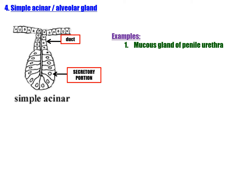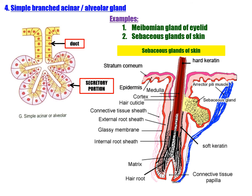Fourth: simple acinar or alveolar gland — secretory unit round or oval in shape. Example: salivary gland, mucous glands of the penile urethra. Acinar gland: secretory unit round or oval. Alveolar gland: secretory unit flask-shaped. The terms 'acini' and 'alveoli' are often used synonymously. Glands where the secretory elements are greatly distended are called saccular glands. Classification summary: unicellular, simple tubular, simple alveolar, compound tubular, compound alveolar, and compound tubulo-alveolar glands.